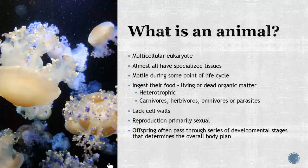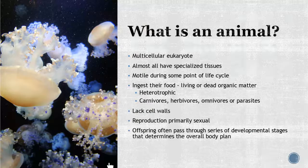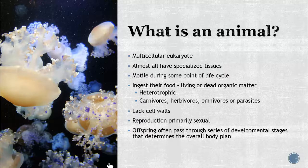We talked about the other kingdoms before: the Archaea bacteria, Eubacteria, plants, protists, and fungi, and we talked about key characteristics of each. We are now on to the sixth kingdom — Kingdom Animalia. These are going to be multicellular eukaryotes.